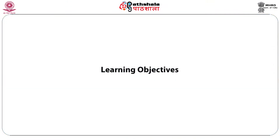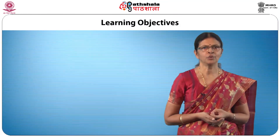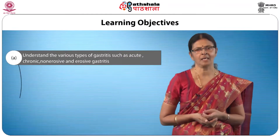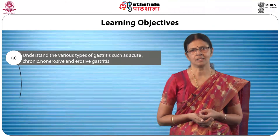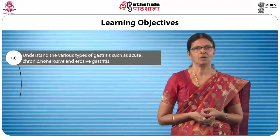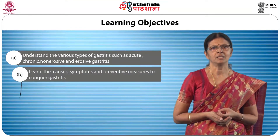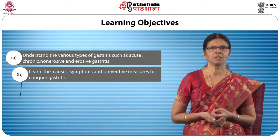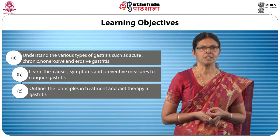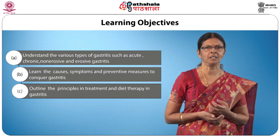I think you are clear on the last module on peptic ulcer. Now shall we go through the next module on gastritis, which is closely associated with the problem of peptic ulcer. After going through this module you will be able to understand the various types of gastritis such as acute, chronic, non-erosive and erosive gastritis, learn the causes, symptoms and preventive measures to conquer gastritis, and outline the principles in treatment and diet therapy in gastritis.